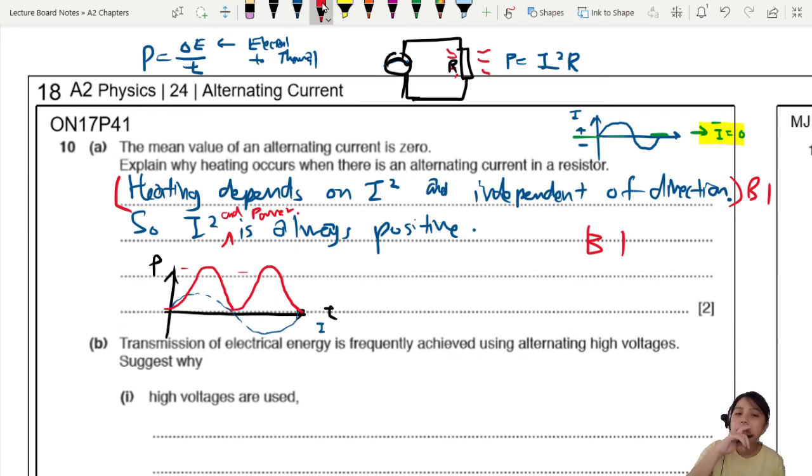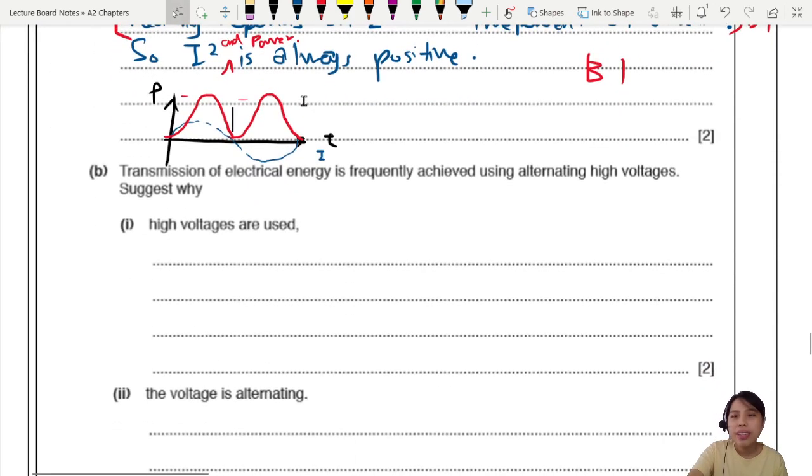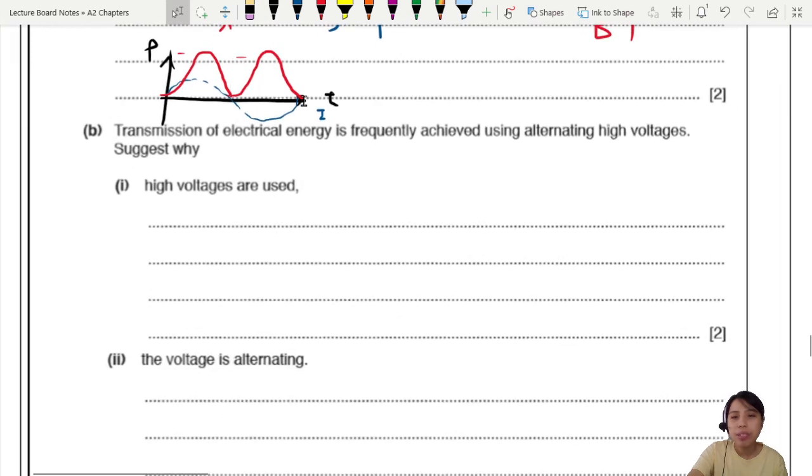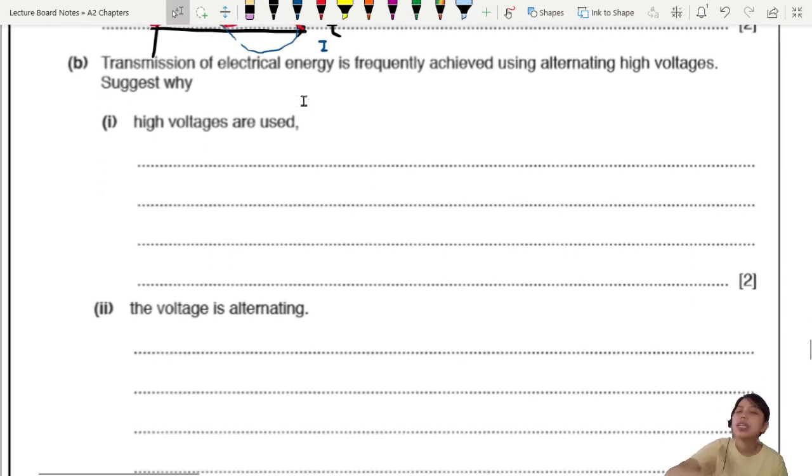Next, transmission of electrical energy is frequently achieved using alternating high voltage. Why? We haven't learned this, have we? Well, there's a part of theory about this. So why do we use very high voltage? In many countries, it is about 220, sometimes 240 volts. Some other countries in Europe or US, 120 volts. But these are very high voltages, peak to peak. Wow, this one I'm applying can short and die. So these are very high voltages. Why do we use that?